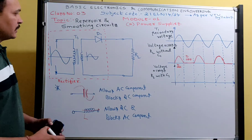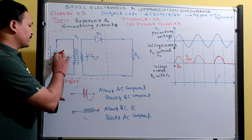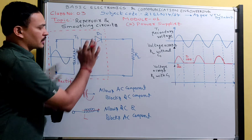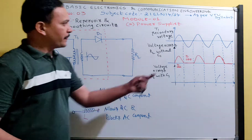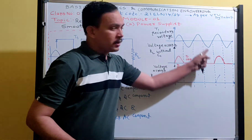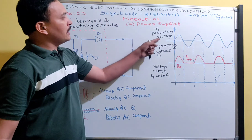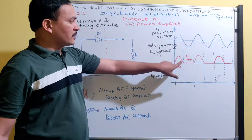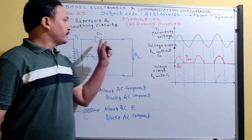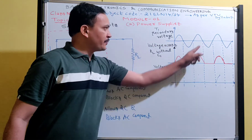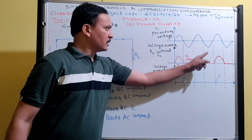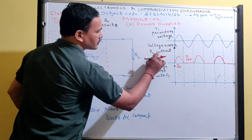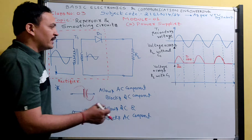Let me explain how the rectifier works. If I give an AC supply, the transformer secondary steps down the AC voltage applied to the circuit. During the positive cycle, the diode turns on and voltage appears across the load. During the negative cycle, the diode is reverse biased — no output voltage. Again during the positive cycle, output voltage appears; during the negative cycle, no conduction.